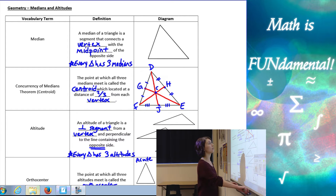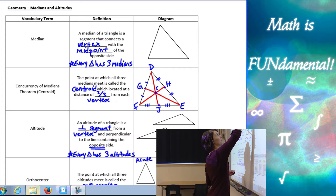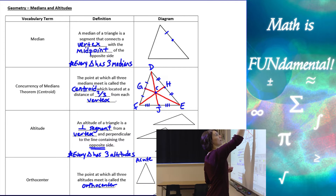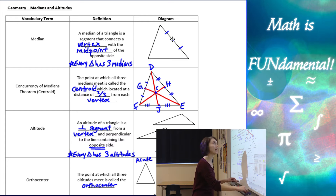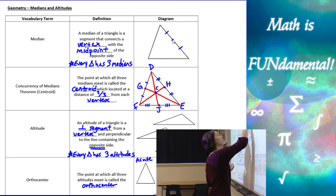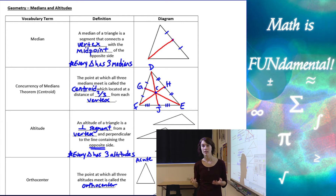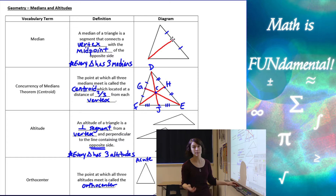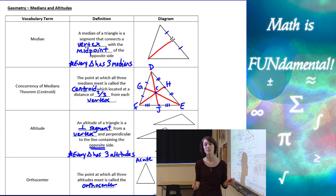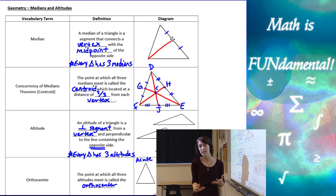So what that looks like, if I have a midpoint of a side of a triangle and I connect that midpoint to the vertex that's opposite from that, I get a line that looks like this — and that's a median of a triangle. Every triangle has three medians because we have three midpoints and three vertices, so if we connect those, we end up with three medians.